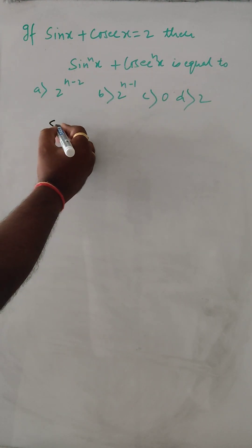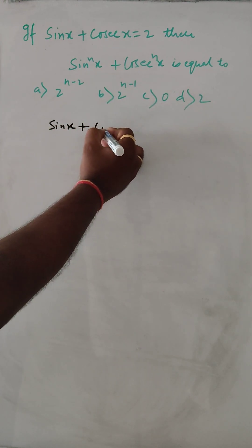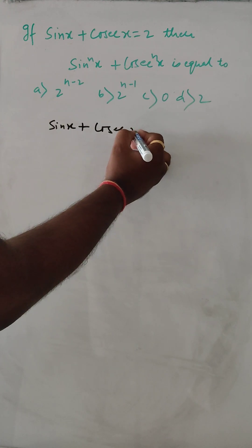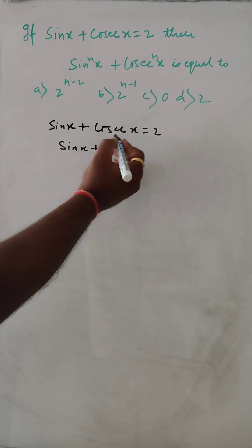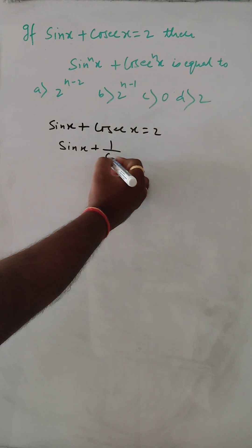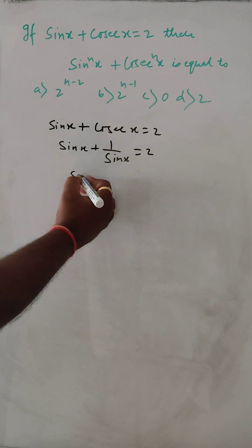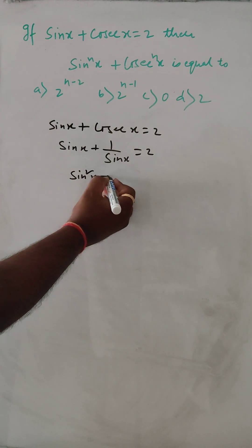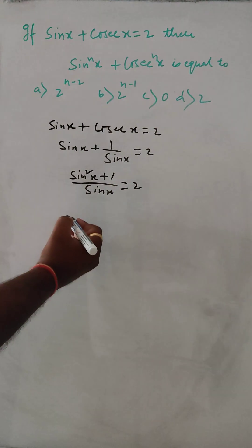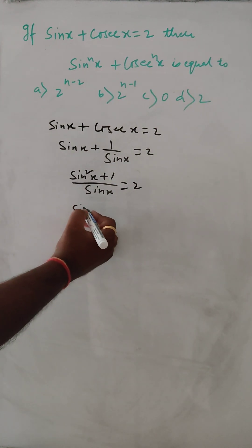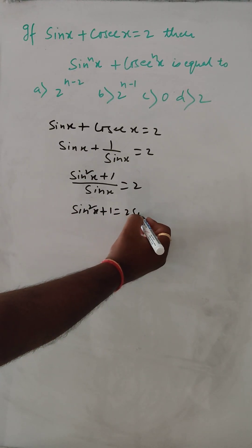So here sin x plus cosec x is given. So cosec x we can write as one by sin x. Then sin square x plus 1 over sin x is equal to 2. Then sin square x plus 1 equals 2 sin x.